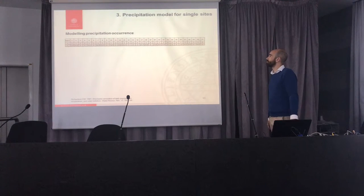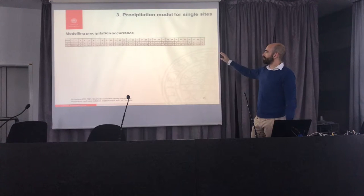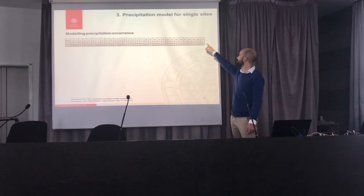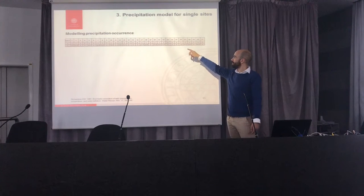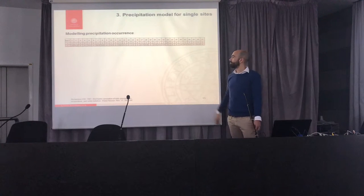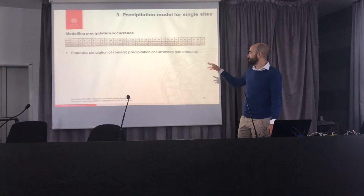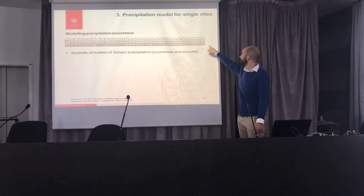Now I'd like to talk about one approach for simulating daily rainfall at a single location. This is a vector taken for a month — 31 days — with binary information on whether the day is rainy or dry, and a certain observed rainfall value. The simplest model is a Markovian approach where you treat the occurrence and the amount separately. For occurrence — zeros and ones — you can use a very simple two-state first-order Markov chain.